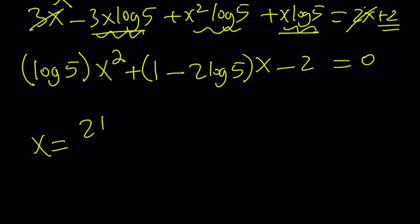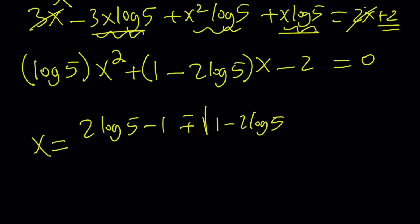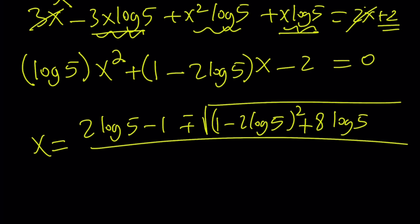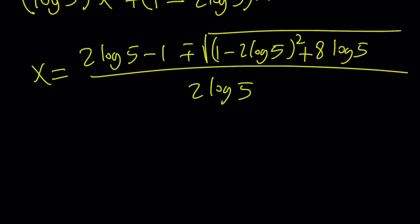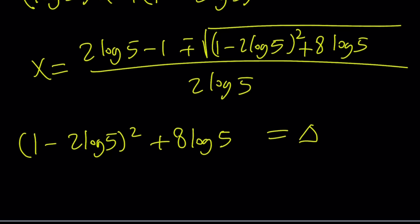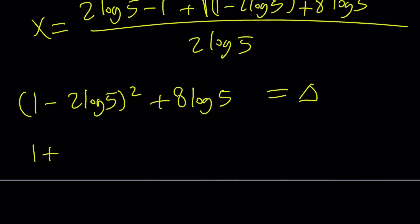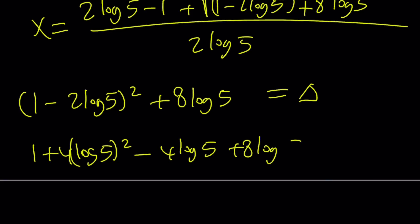x equals negative b — which is (2 log 5 minus 1) — plus or minus the square root of (1 minus 2 log 5) squared, minus 4ac which gives plus 8 times log 5, all divided by 2 log 5. Let's simplify the discriminant: squaring (1 minus 2 log 5) gives 1 plus 4 log²5 minus 4 log 5, and then adding 8 log 5.